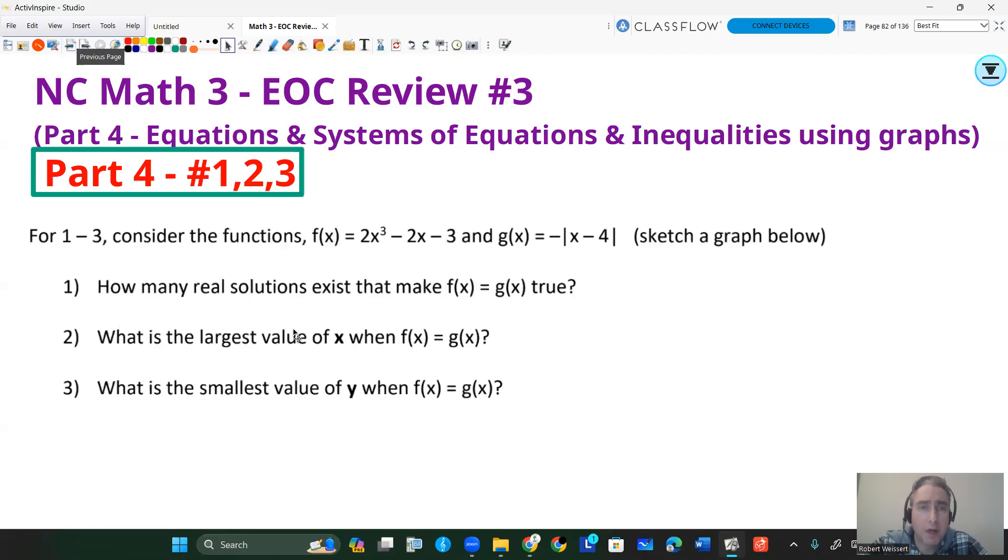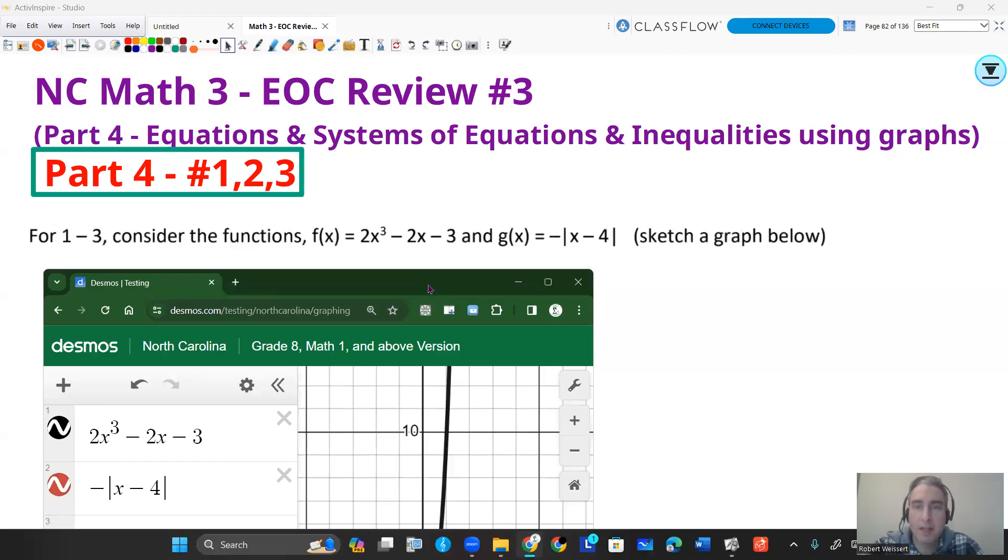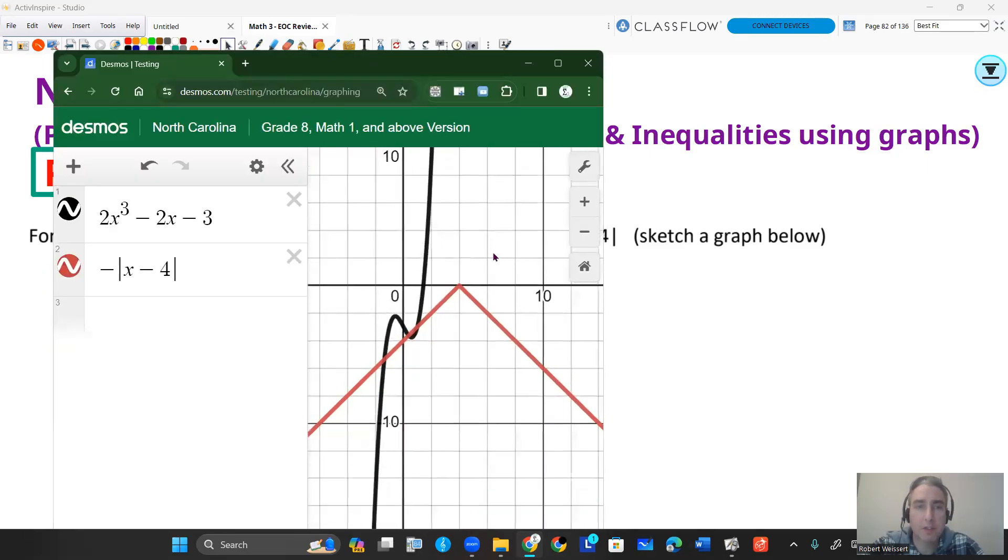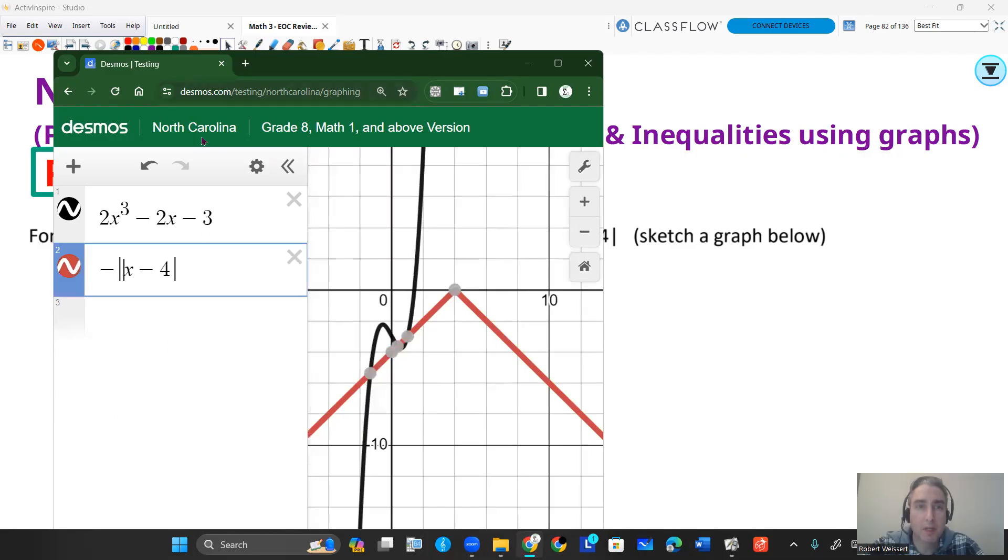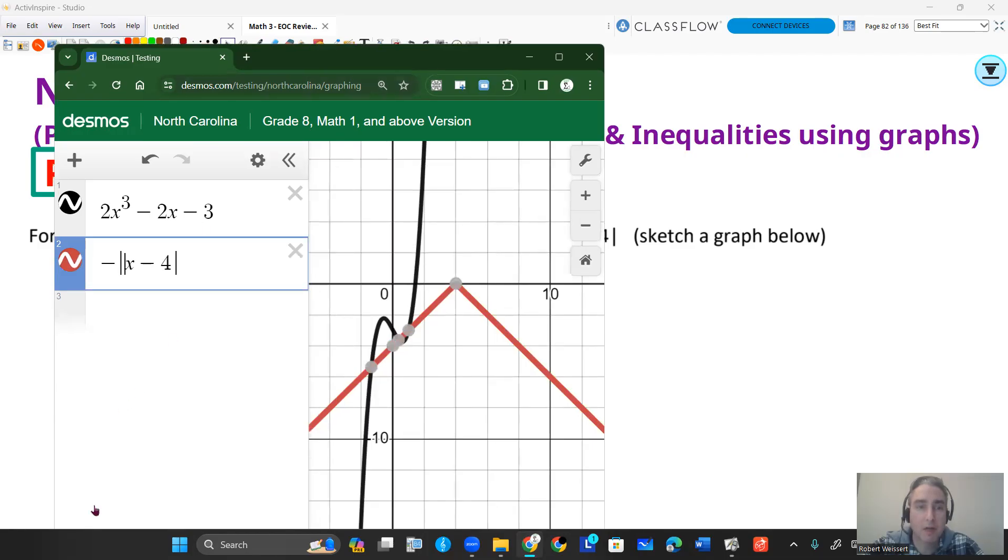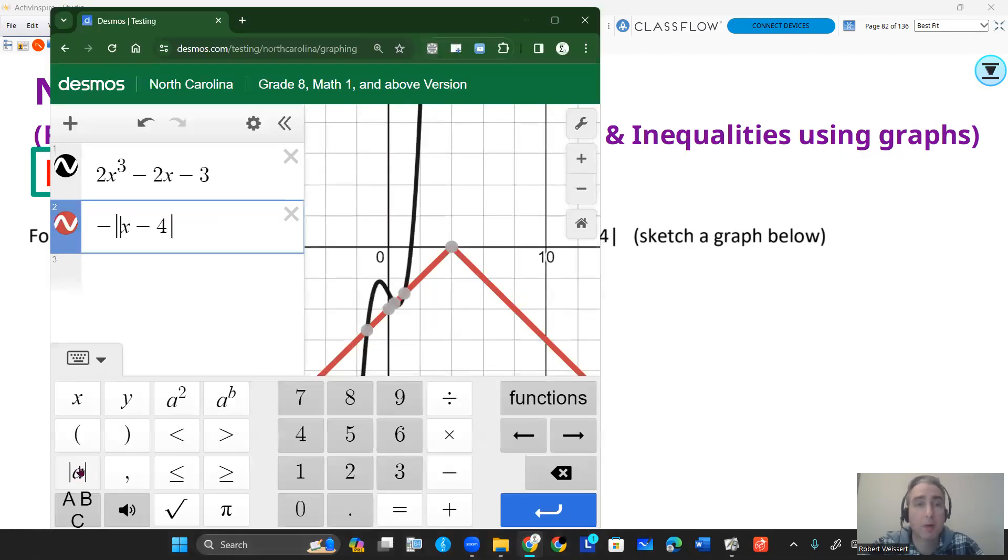We have two functions here. f(x) is 2x³ - 2x - 3 and g(x) is negative absolute value of x minus 4. The first thing I want to do is graph those and sketch what those graphs look like. So I'm going to key them both in. I'm not going to worry about typing f(x) and g(x) since there's just one variable. That's what your graph should look like. Your absolute value can be found using the absolute value function down here, or you can do shift and hold a button above enter, and you can also get that vertical line that way as well.